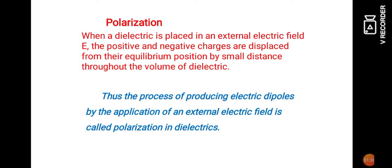But they have the ability to store electrical energy. When the two charges are moving away from their equilibrium position, an electric dipole is produced. Thus, the process of producing electric dipoles by the application of an external electric field is called polarization in dielectrics. When the external electric field is applied, the positive and negative charges move in opposite directions. When it is removed, both charges return to their original position.